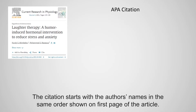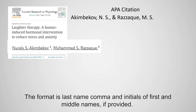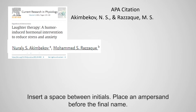The citation starts with the author's names in the same order shown on the first page of the article. The format is last name, comma, and initials of the first and middle names if provided. Insert a space between initials and place an ampersand before the final name.